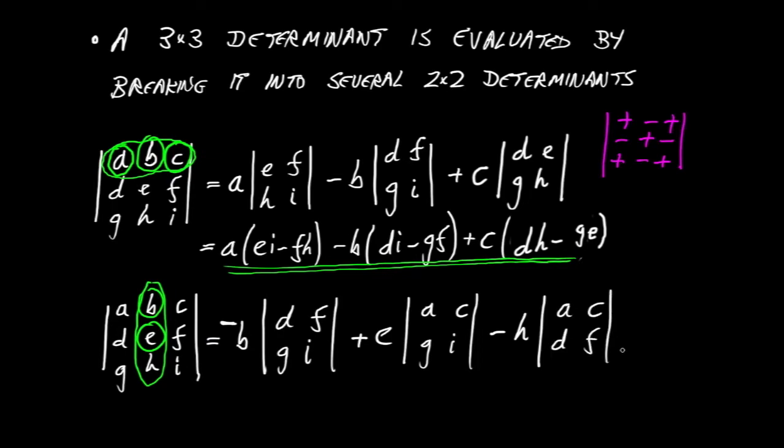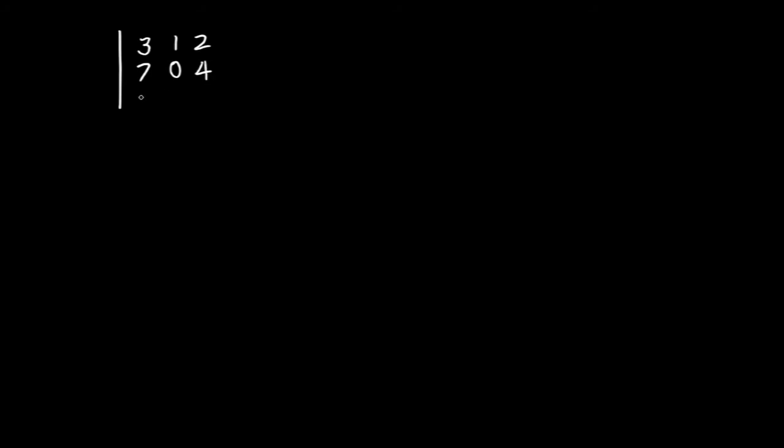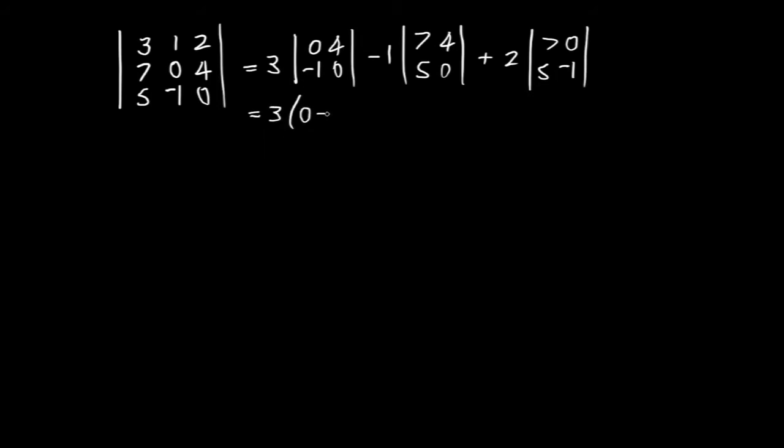Of course, I could then write out these 2x2 determinants explicitly. But the point is, it will give me the same answer. Let's do an example and see why we would choose one method or the other. Here are just some random numbers. It's 3x3. First off, let's work along the top row as we did in our first example. So that's going to be 3, and then minus 1, and then plus 2. I can go ahead and work out explicitly what this comes out at. In fact, it will be 12 plus 20 minus 14, and it comes out as 18. So there we are. We've worked out a 3x3.